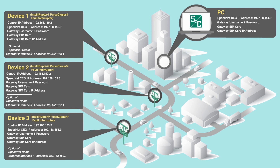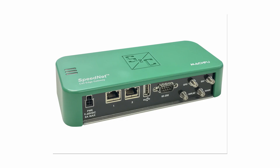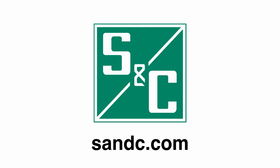After all gateway routes are working properly, the process of confirming communication over the cellular and Speednet radio networks is repeated for each Intelliruptor fault interrupter. With this example, you should have a better understanding of how to configure the Speednet Cell Edge Gateway to enable monitoring and control of automation devices. Further and more specific information can be found on our instruction sheets and on snc.com.